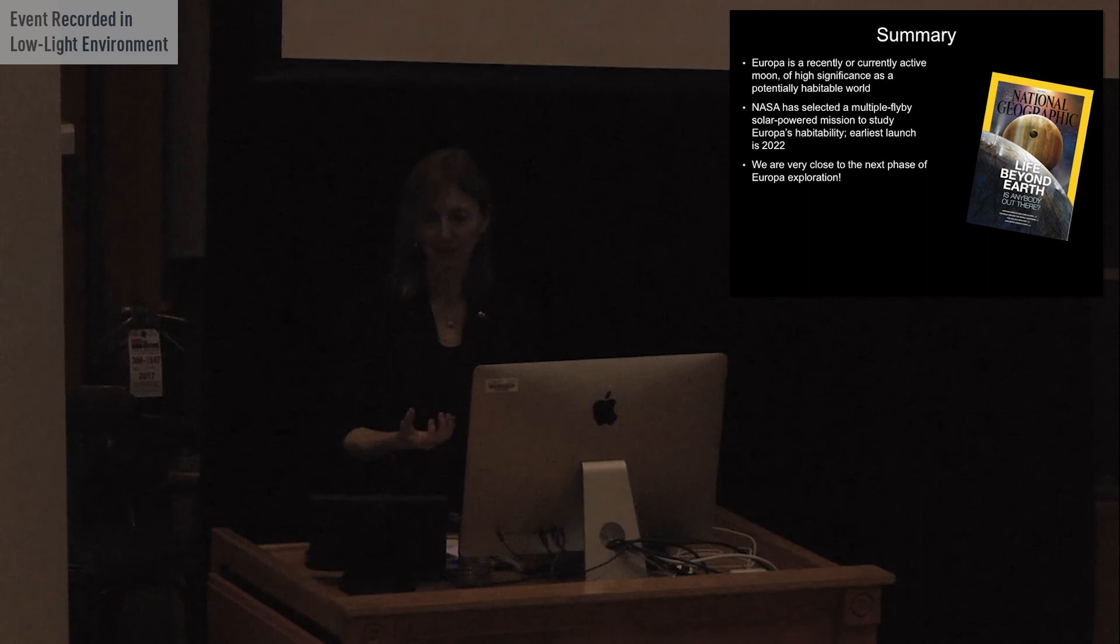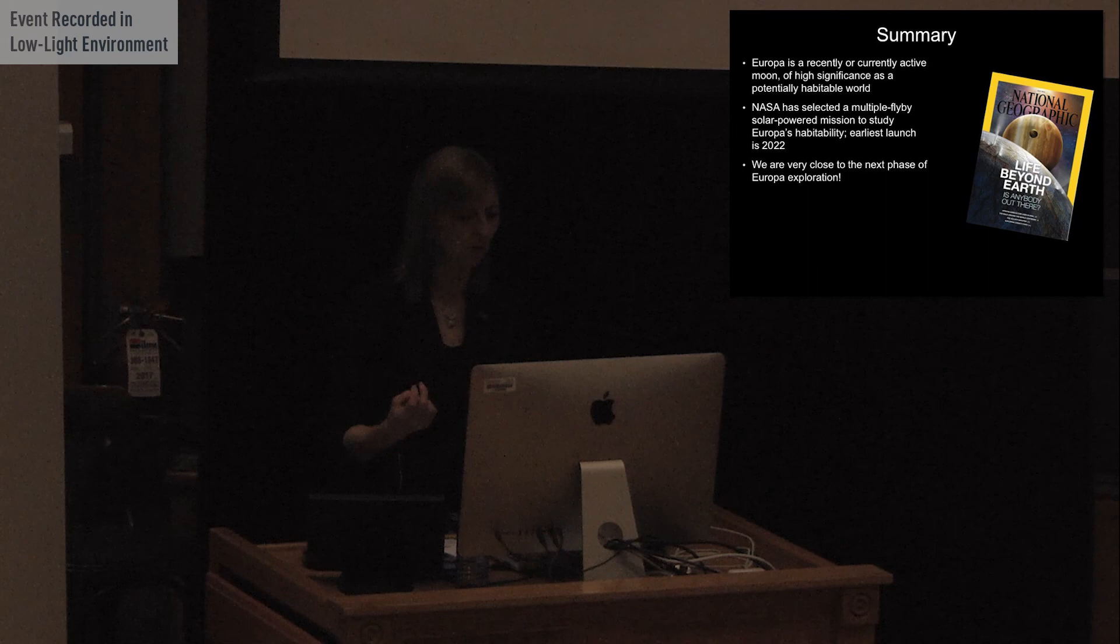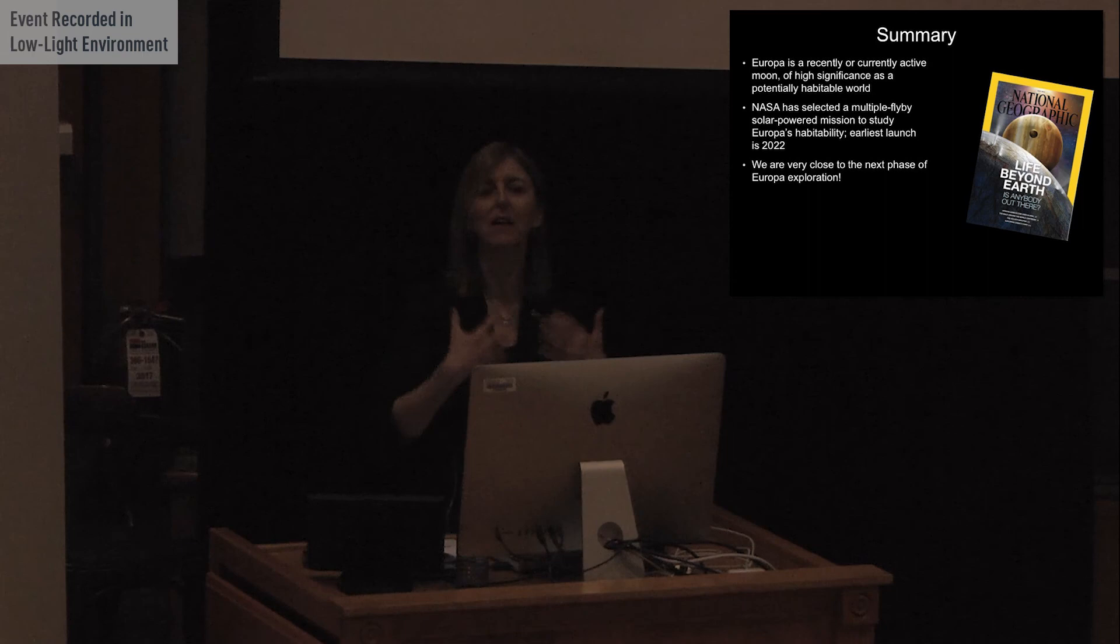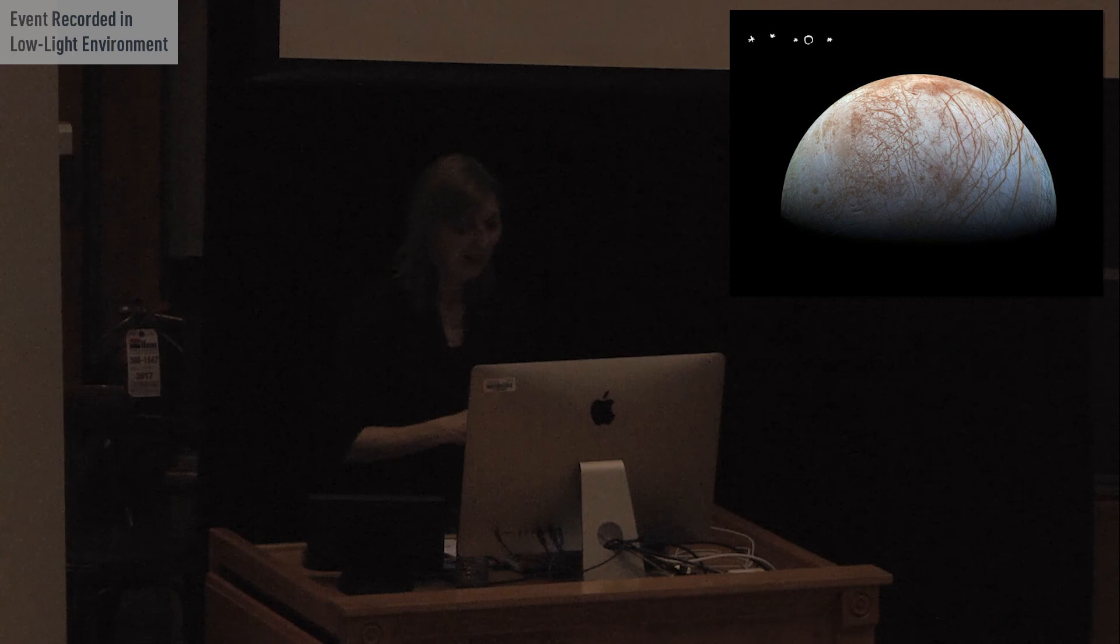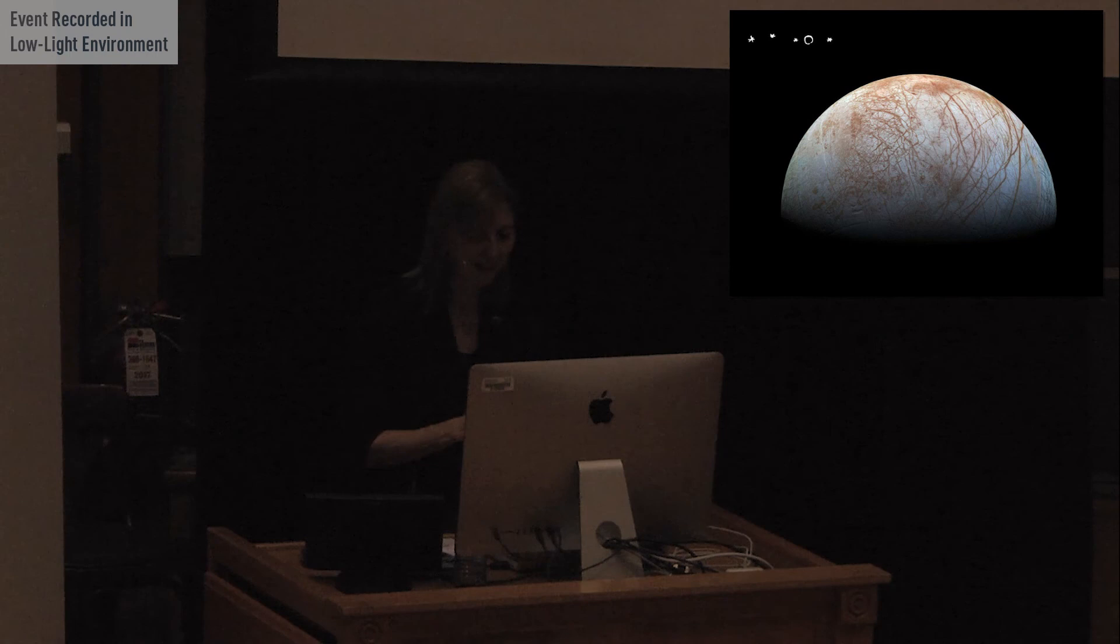So just to summarize, Europa is certainly a recently active moon and possibly even currently active. And it has a very high significance as a potentially habitable world. It's an ocean world. NASA recently selected a multiple flyby mission to go and study it. So this will be the future exploration of Europa. The earliest launch is in 2022. So we're certainly hoping that will happen. And so we're very close to the next phase of Europa exploration. And as my friend Bob Pappalardo, who's a project scientist on the Europa Clipper mission, it's called the Europa Clipper. I don't think I mentioned that. He always likes to tie it back to Galileo and to say that if life was discovered at Europa, it could spawn a whole new scientific revolution. How interesting to think that one of Galileo's little stars may again change our sense of place in the universe. Thank you very much.